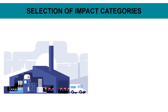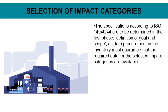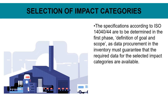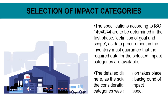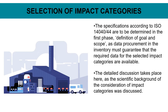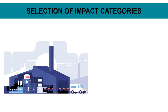Mandatory elements: selection of impact categories. The specifications according to ISO 14044 are to be determined in the first phase — definition of goal and scope — as data procurement in the inventory must guarantee that the required data for the selected impact categories are available. The detailed discussion of the scientific background of impact categories takes place here.